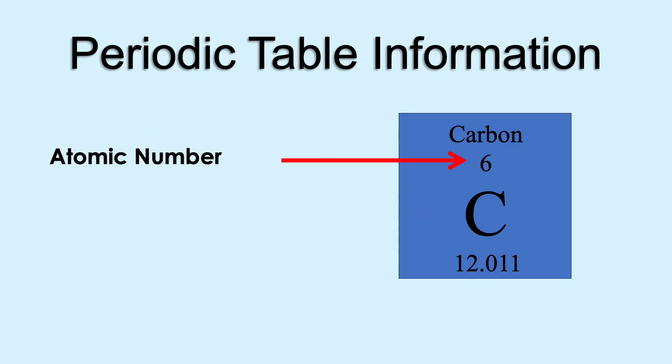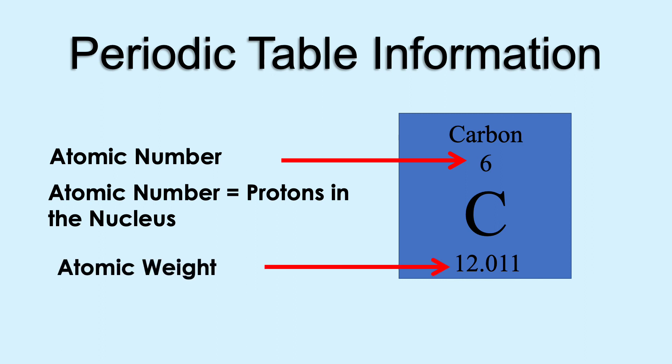You'll also find the atomic number. The atomic number is the number of protons in the nucleus. And you'll find the atomic weight, which is the average of the isotopes for that element.